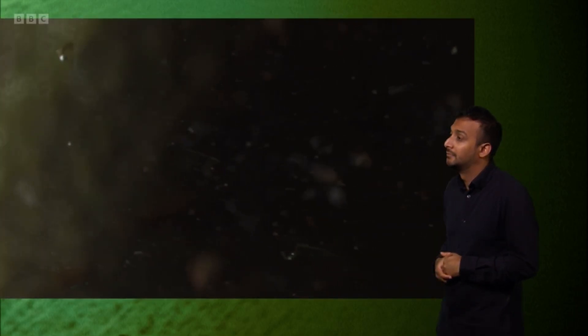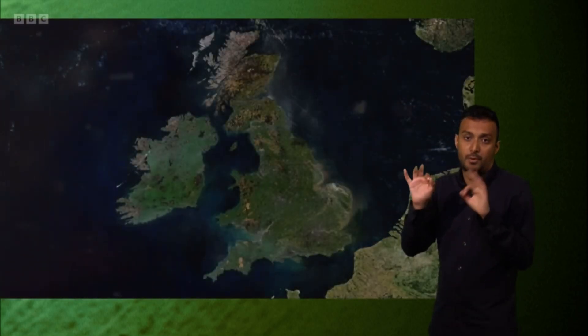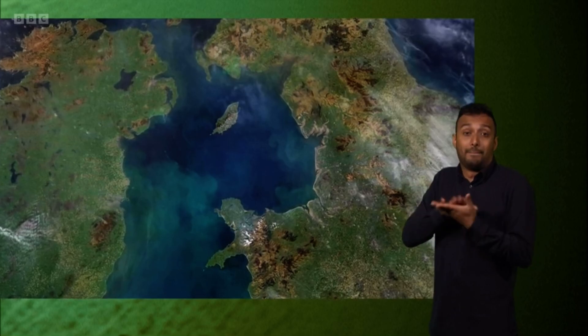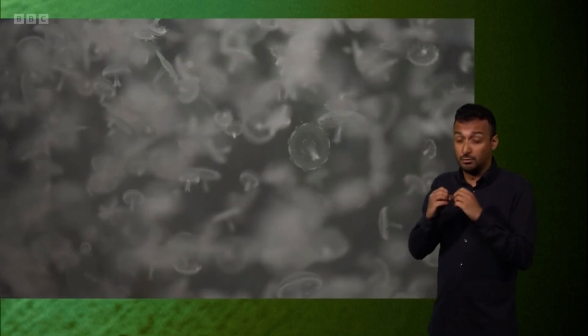Their dispersal is timed to perfection, to coincide with the UK's springtime plankton bloom. And with food in such abundance, the jellyfish can grow rapidly, nearly six millimetres a day.